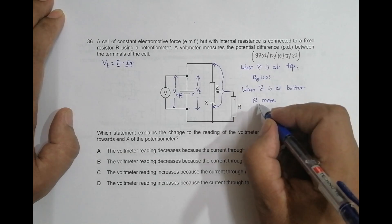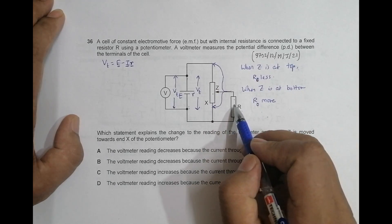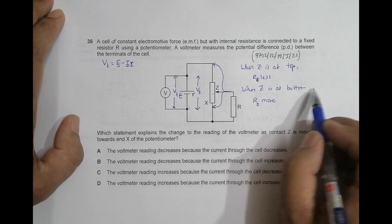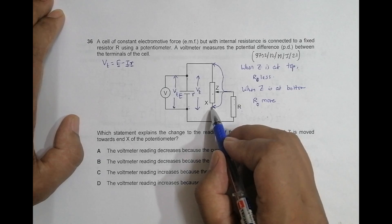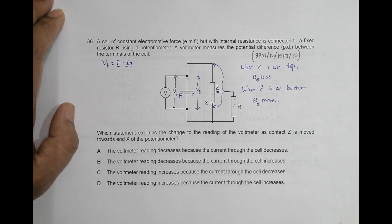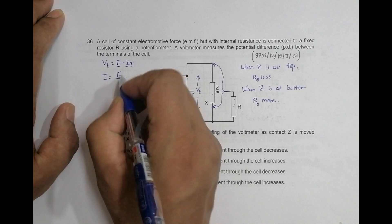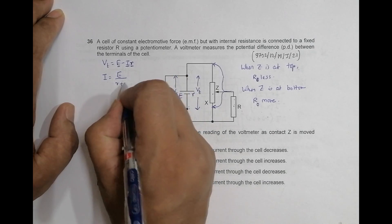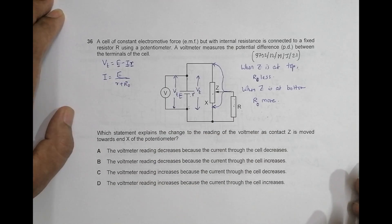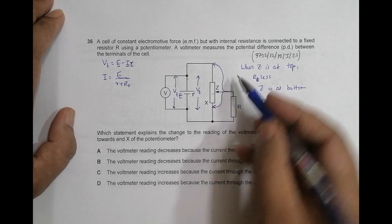Let's call it R_outer. When Z is at the top, R_outer is less because there is a resistor in parallel. When Z is at the bottom, only one resistor remains so R_outer is more. The current i equals E divided by the total resistance, which is small r plus R_outer.